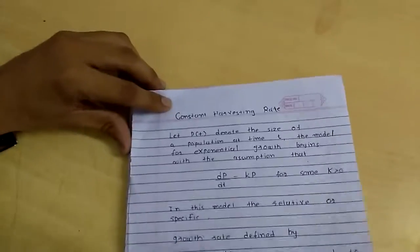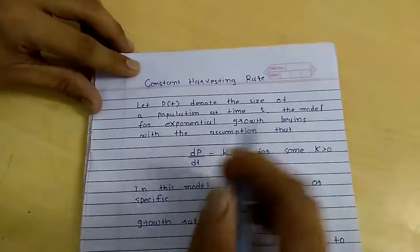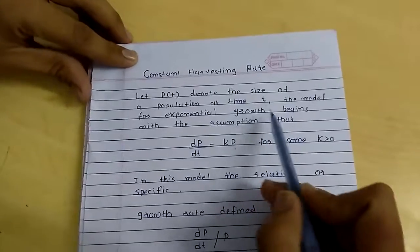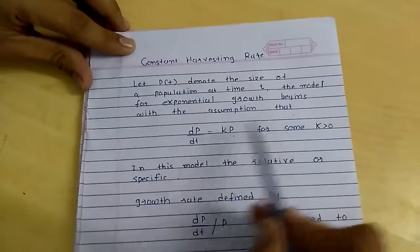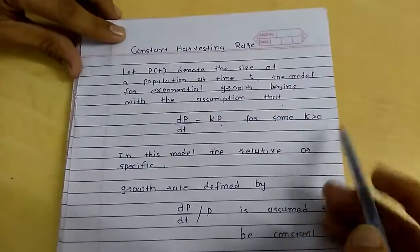Let's see about the policy that humans desire which is called constant harvesting rate. Let p denote the size of a population at time t. The model for exponential growth begins with the assumption that dp/dt equals k times p for some constant k greater than 0.